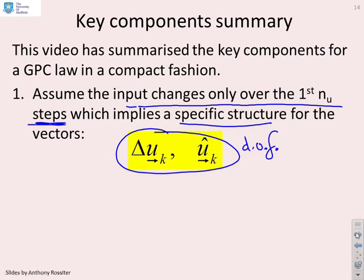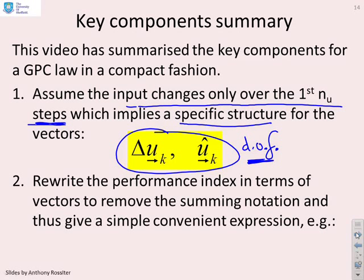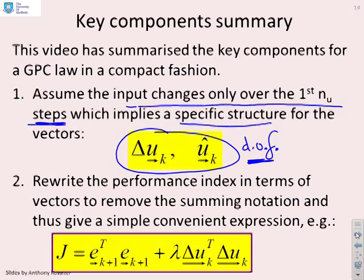And then what we're going to do is rewrite the performance index in terms of the vectors by removing the summing junction and using this vector notation. And so, we have very compact performance index notation, which makes it, as you will see, easier to handle later on.